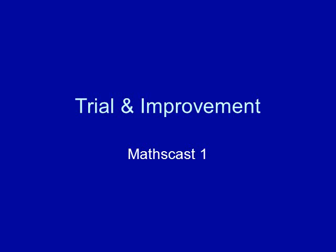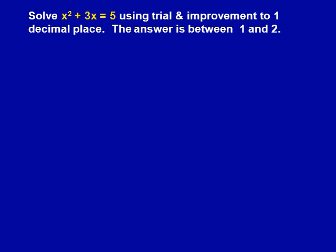Trial and Improvement, MathsCast1. This is a trial and improvement question. It will be worth 3 marks and will always be in the calculator paper. The question is solve x² + 3x = 5 using trial and improvement to one decimal place. The answer is between 1 and 2.